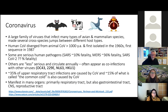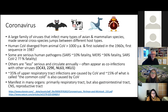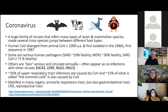Coronaviruses are a very large family of viruses that infect many types of avian and mammalian species, from turkeys to even whales. These viruses have made cross-species jumps many times in their evolution between different host types. Evolutionary biologists think the human coronavirus as a pathogen diverged from animal coronaviruses well over a thousand years ago, so we have been living with them, perhaps unknowingly, for quite some time.